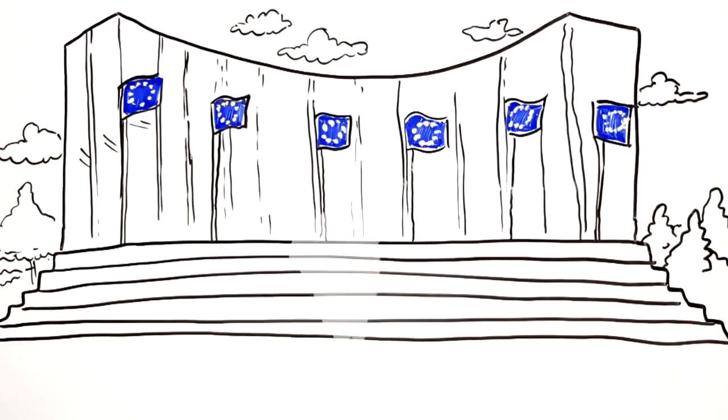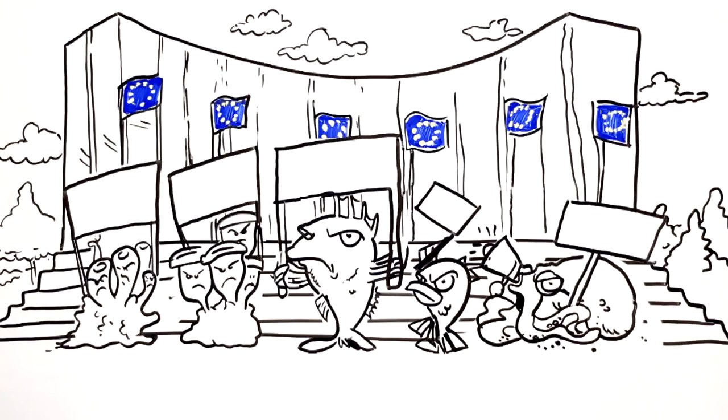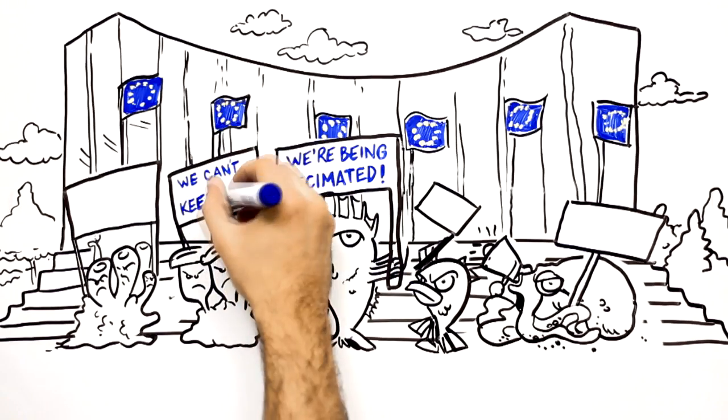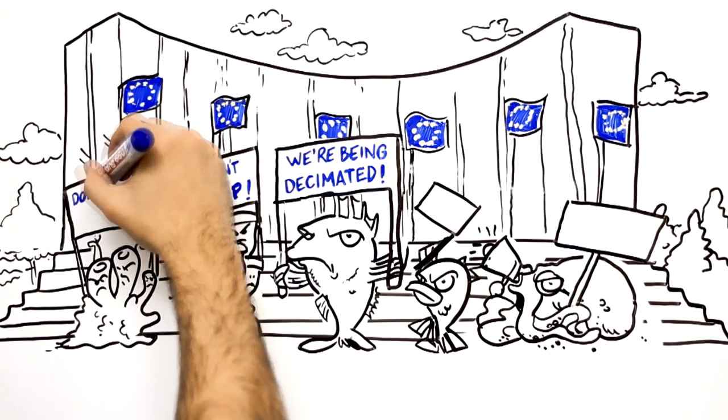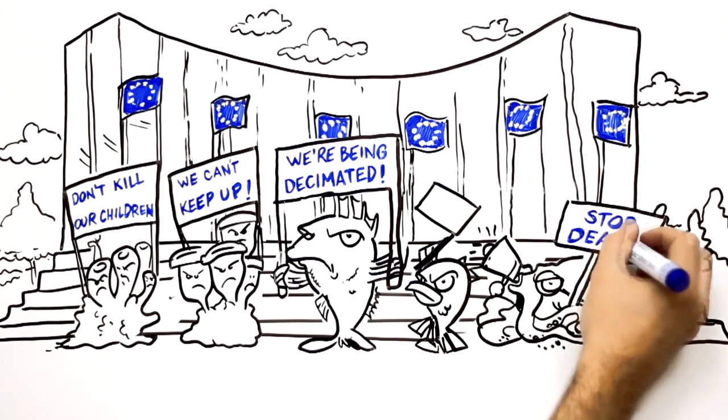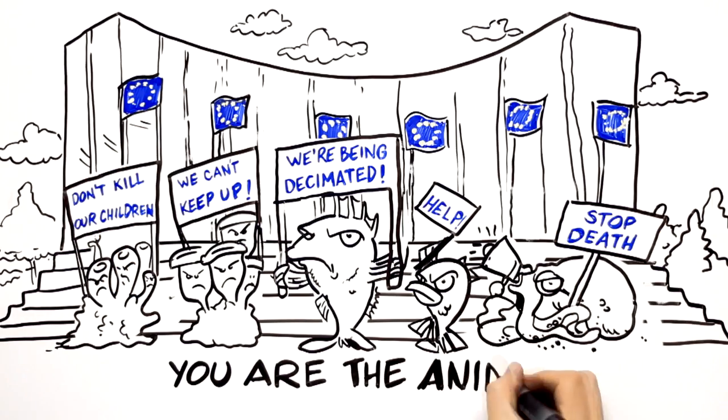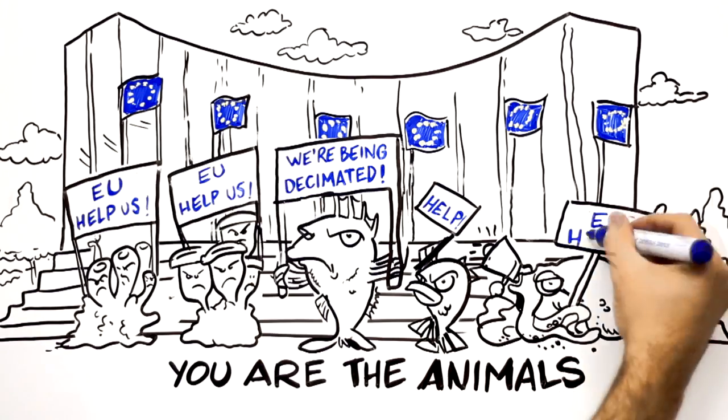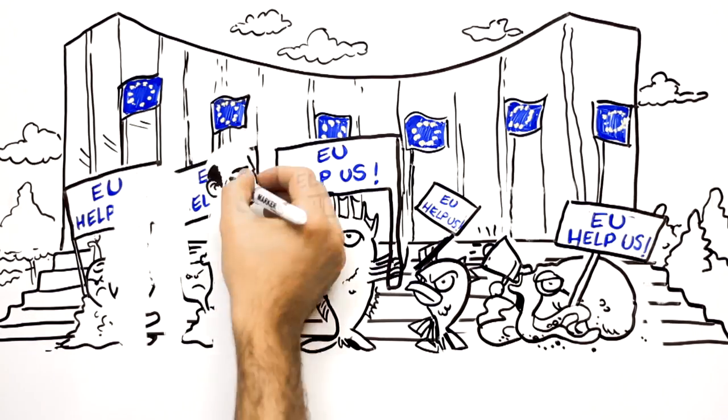We are in Brussels to let the EU know that we're being decimated. We don't reproduce fast enough to keep up. We weren't meant for fisheries like these. You are the animals. EU, help us now that you are aware of the problems. We know you can help us.